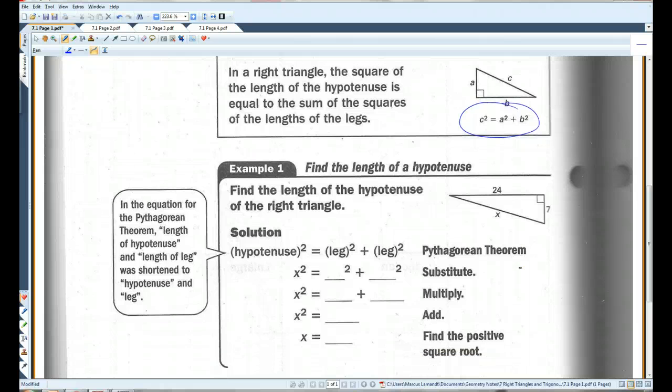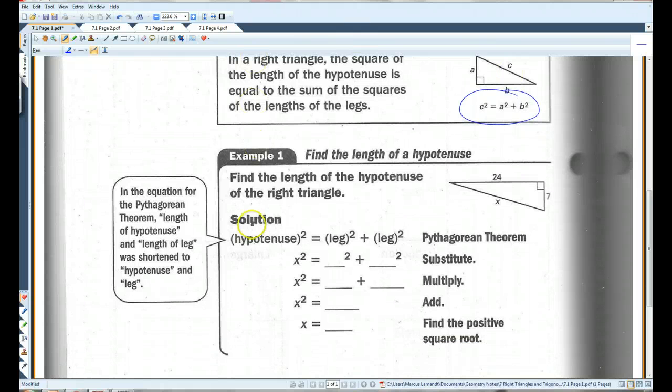I'll do a quick example. Find the length of the hypotenuse of the right triangle. So we're going to use C squared equals A squared plus B squared. C is always the hypotenuse. The hypotenuse, if you guys remember, is the longest side of the right triangle. So in this case, it's X. So this is X squared. A and B, it doesn't matter which one you put as A, which one you put as B, as long as A and B are the legs. So I'm going to put 7 for the first one and 24 for the second one. 7 squared is 49. 24 squared...